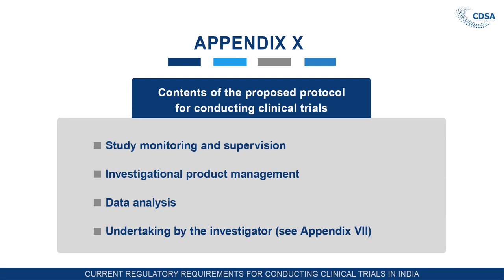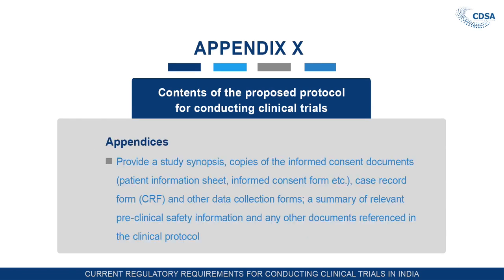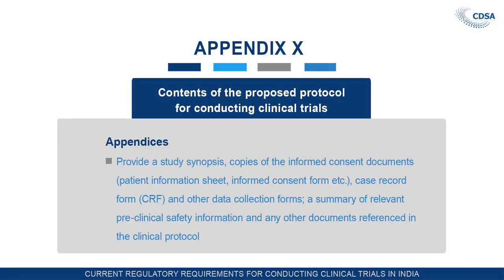The undertaking by the investigator, as seen in appendix 7, must be signed by all investigators involved. Appendices should provide a study synopsis, copies of the informed consent document — the patient information sheet conveying information to the patient, and the informed consent form for signature if the subject agrees. Also required: case record forms and other data collection forms, a summary of relevant preclinical safety information, and any other documents referenced in the clinical protocol.